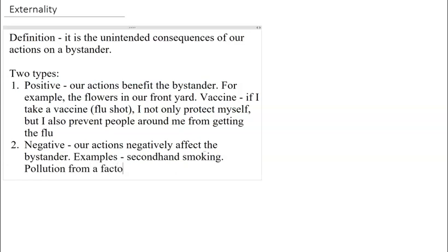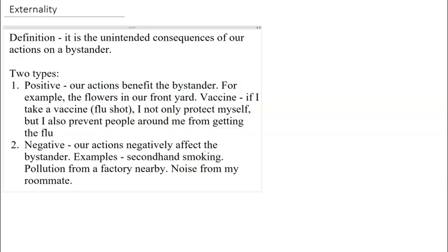Another example is pollution from a factory nearby. I may live near the factory and spend my day near it. When I inhale dangerous gases like carbon monoxide, sulfur dioxide, and nitrogen oxide, they may cause health issues — someone living far away may not have the same effects, but since I live around that factory, I get negatively affected by the pollution. Noise from a roommate is another example — if my roommate plays very loud heavy metal music, my roommate may enjoy it, but I and my neighbors may not. That is another example of negative externality.